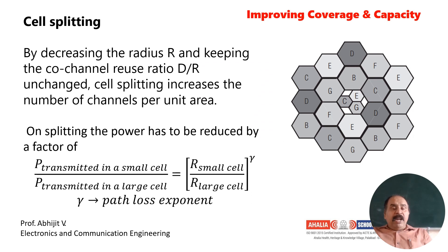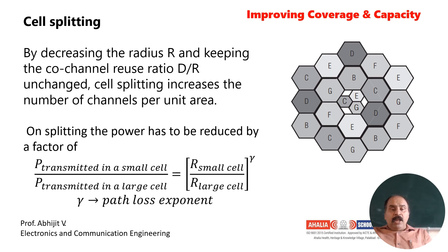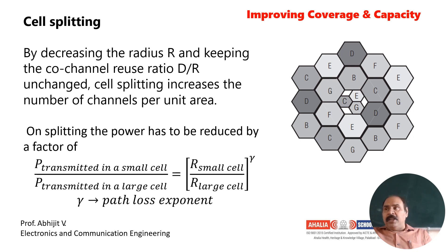By decreasing the radius R and keeping the co-channel reuse ratio D/R unchanged, cell splitting increases the number of channels per unit area.